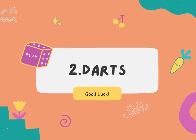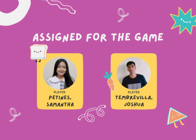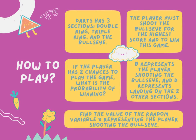Next, we have Darts. Here's how we can play it. Darts has three sections: double ring, triple ring, and the bullseye. The player must shoot the bullseye for the highest score to win this game. If the player has two chances to play the game, what is the probability of winning? D represents the player shooting the bullseye, and M represents landing on the two other sections.